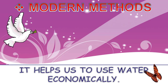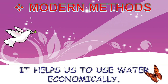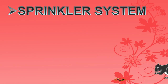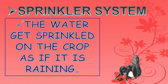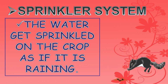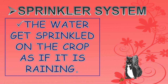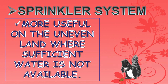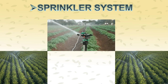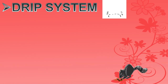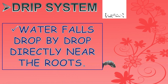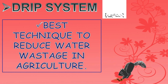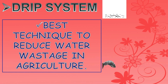Modern methods help us to use water economically. First: sprinkler system. Second: drip system. Sprinkler system — the water gets sprinkled on the crop as if it is raining. It is more useful on uneven land where sufficient water is not available. Drip system — water falls drop by drop directly near the roots. It is the best technique to reduce water wastage in agriculture.